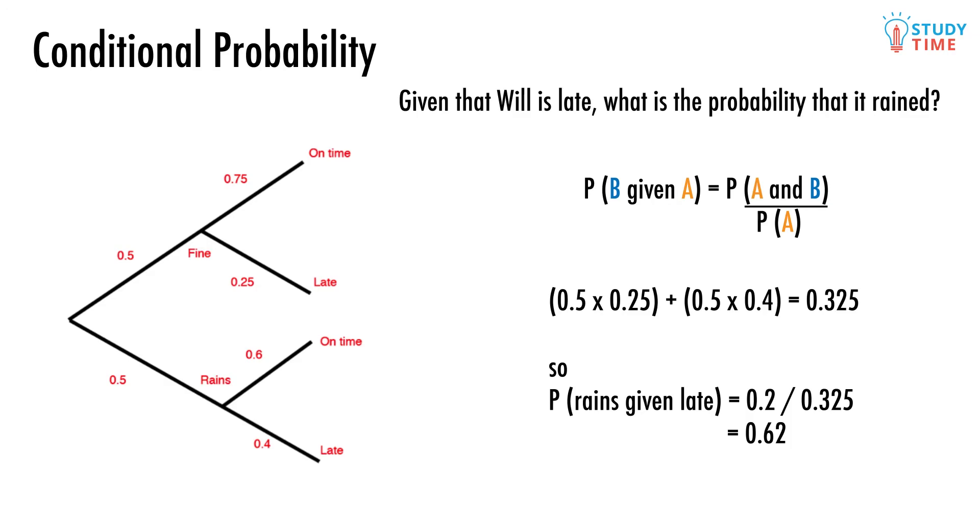Next we need to divide this number by the probability that the condition happened. Remember, the condition this time around is that Will is late. To find the probability of Will being late, we use these two paths. The total probability here is 0.325. Therefore we divide the original probability by this new one to get our final answer. The probability that it rains given Will is late equals 0.2 divided by 0.325 equals 0.62.